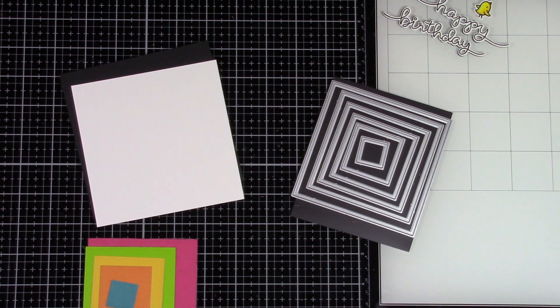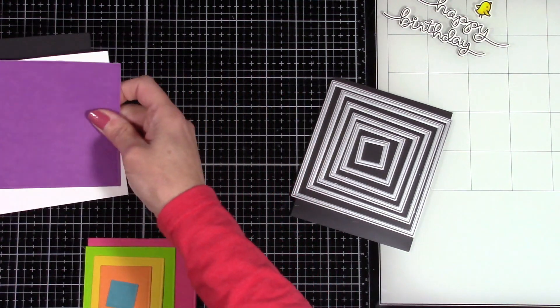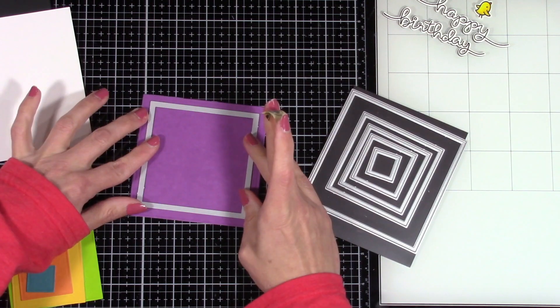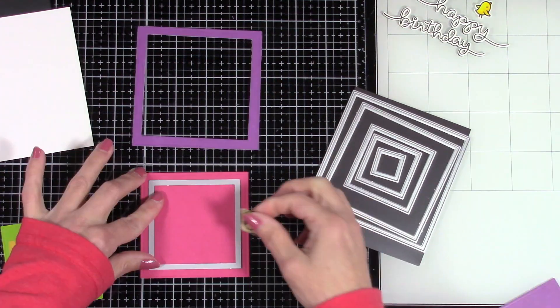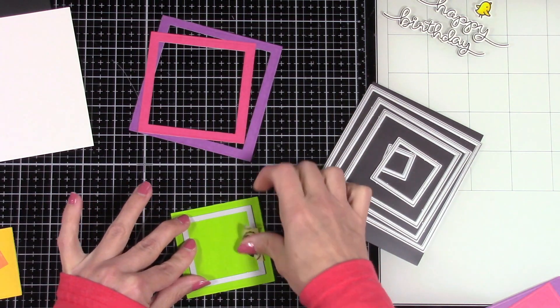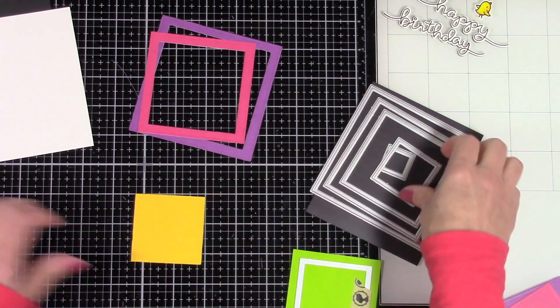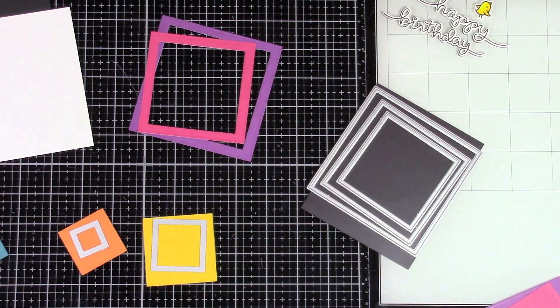So next, I'm going to do one using just the embossed square dies. And the reason why I wanted to do this is to show you that you don't have to have the hearts. Any of the embossed edge dies that you have from the Cat Scrap Shop are going to work perfectly. It does not matter what shape it is. And you can do the same exact type of a card.